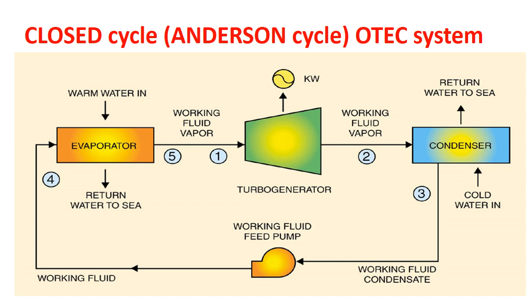The second one is the closed cycle, or Anderson cycle, OTEC system. The working fluid such as ammonia vaporizes in an evaporator. The gas is led through a turbine which drives a generator and in turn generates electrical power. A condenser is used to return the fluid to its original state and, using a pump, the process is repeated. Surface seawater is used to heat the fluid in the evaporator and deep seawater cools it down to liquid state in the condenser. During the process, the surface seawater returns to the sea a few degrees Celsius cooler and the deep seawater a few degrees Celsius warmer than previously.